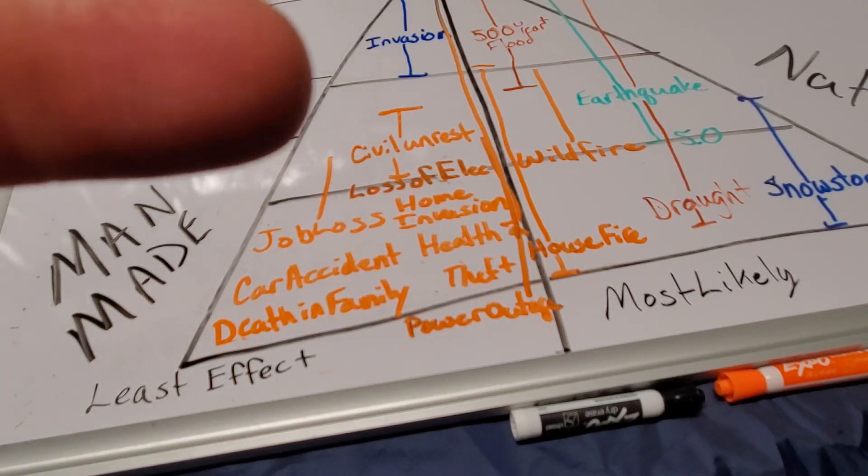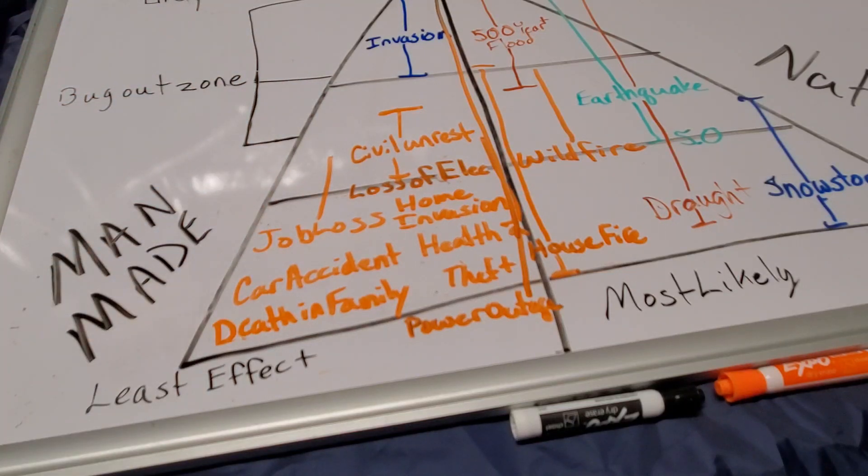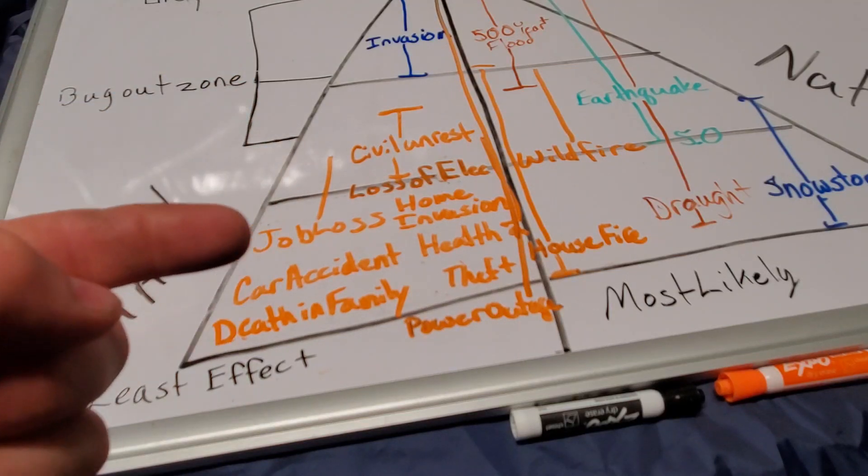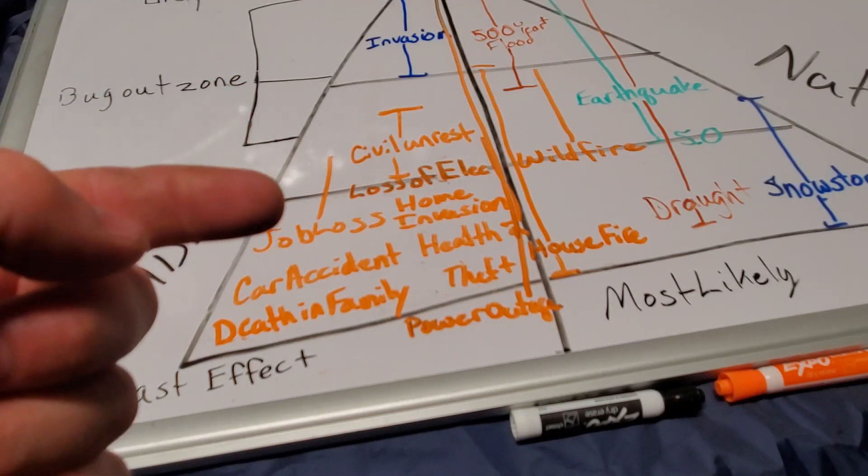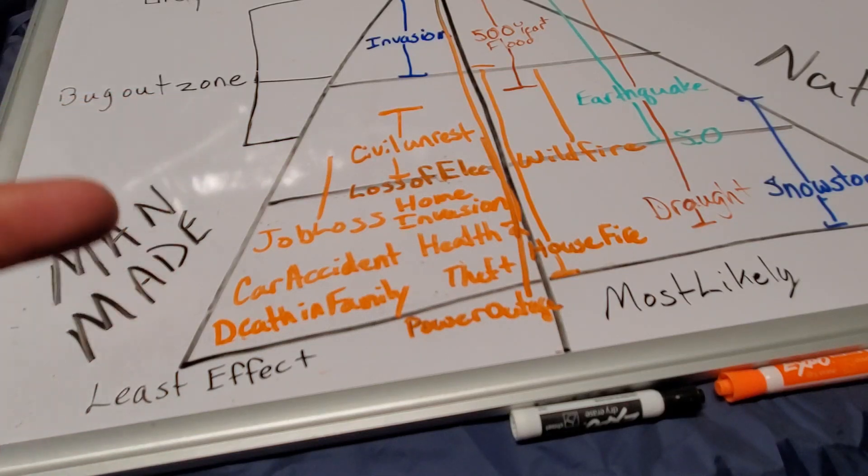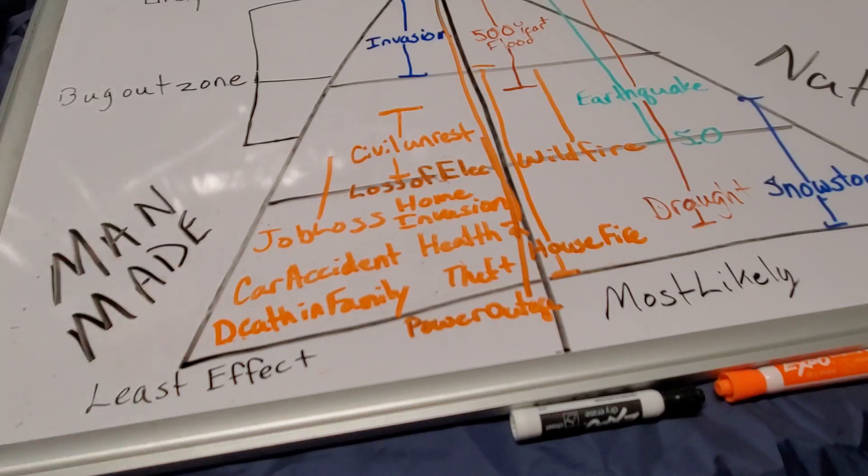These are all your man-made threats, and for me there are many more man-made concerns. I've tried to draw a line of how far up the pyramid this can really affect what I do. Like a job loss is going to affect you. I've designated what I call a bug out zone - like where, as you go up the pyramid of events, could you really get to the point where you had to bug out.